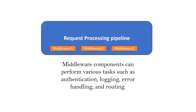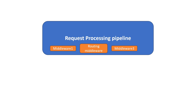Middleware components can perform various tasks such as authentication, logging, error handling, and routing. For each of these jobs, we have to add specific middleware to the request processing pipeline. Thus, routing middleware is one such middleware that we have to add to the request processing pipeline to handle routing.